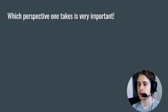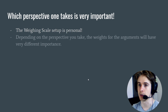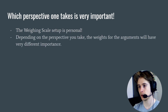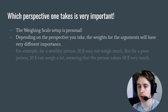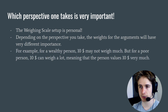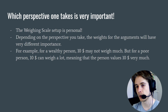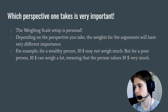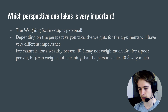Which perspective one takes is very important. The weight scale setup is personal. Depending on the perspective you take, the weights for the arguments will have very different importance. For example, for a wealthy person $10 may not weigh much, but for a poor person $10 can weigh a lot — meaning that the person values $10 very much. And I will also demonstrate this.